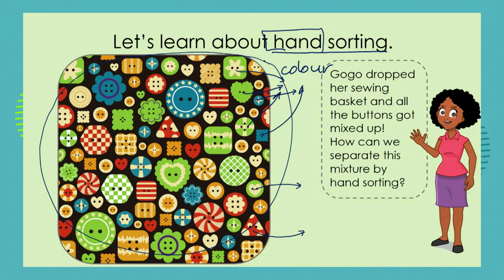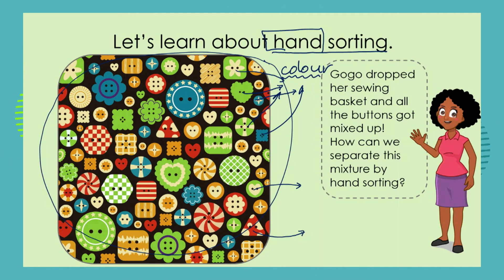What's another way you could sort out these buttons? Koko wanted them sorted by colour, but how else could you sort them? Have a look at the picture. Another way is by shape — there are some round buttons, some triangular buttons, some heart-shaped buttons, and so on. So hand sorting is the simplest way that you can separate items from a mixture.